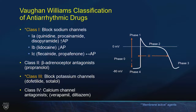Antiarrhythmic drugs have been classified by various taxonomies, but the most commonly used is the Vaughan-Williams classification. There are four classes, but we're really only interested in two: class 1, which are sodium channel blockers, and class 3, the potassium channel blockers. Class 1 agents slow conduction by blunting phase 0 of the action potential, resulting in QRS prolongation. In contrast, class 3 agents — the potassium channel blockers — delay repolarization and lengthen the action potential, making the tissue more refractory. These are the drugs that result in QT prolongation.